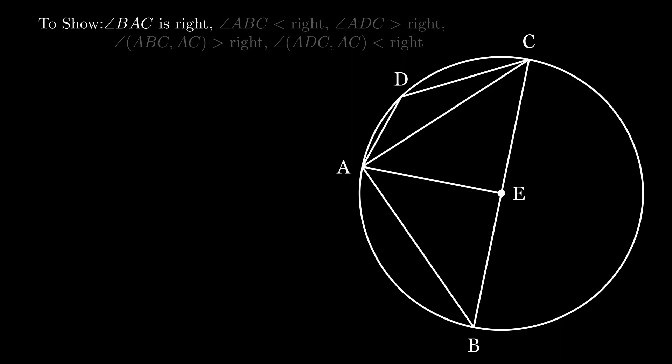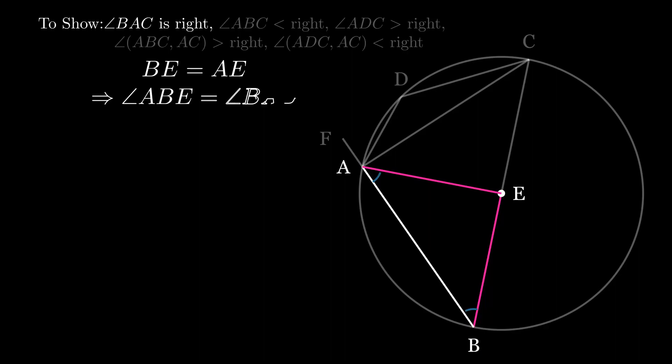Connect AE and extend BA to F. Focus on triangle ABE. BE is equal to AE because they are radii of the same circle. So, the triangle is isosceles and angle ABE is equal to angle BAE.